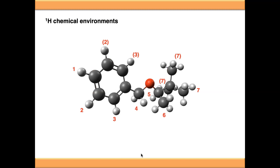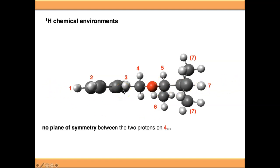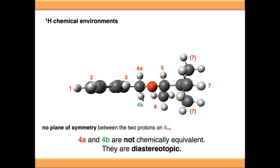Why are we getting two signals from position 4 now? Looking at the molecule in 3D, turned on its end so we're looking down the backbone, we can see there is no longer a plane of symmetry down the backbone. By adding the methyl group onto carbon 5, we've broken that plane of symmetry and created a stereocenter — four different groups attached to a central carbon. Stereocenters break symmetry, so we no longer have a plane of symmetry between the two protons on carbon 4. The two protons — numbered 4a and 4b — are in different chemical environments, making this a diastereotopic CH2 group.